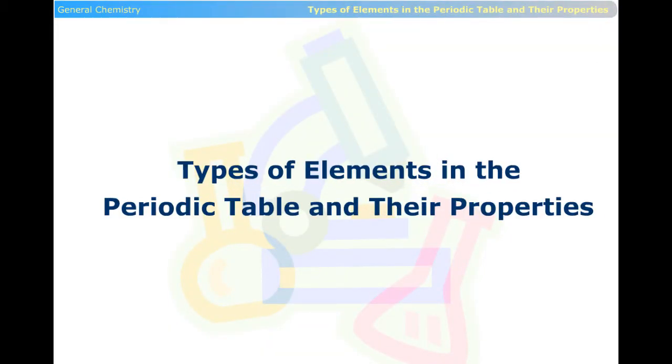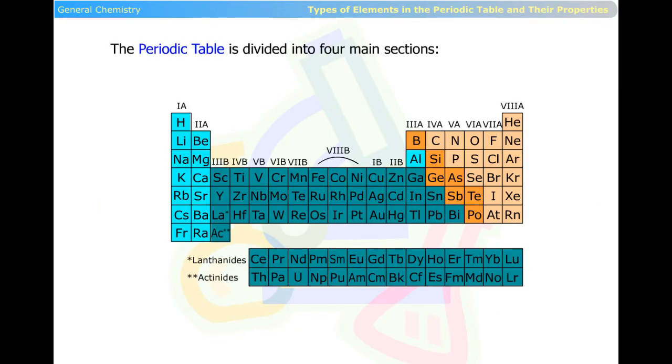Types of elements in the periodic table and their properties. The periodic table is divided into four main sections.